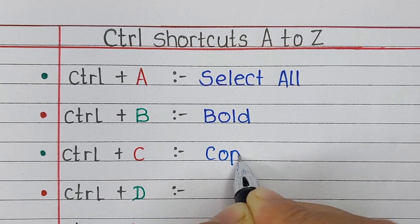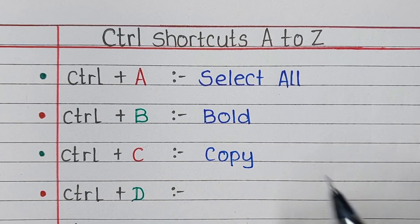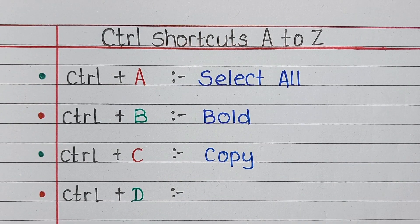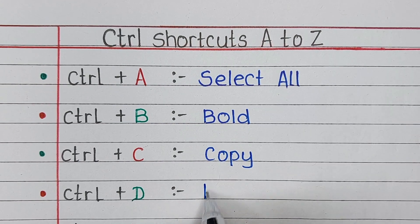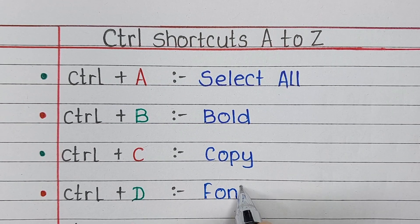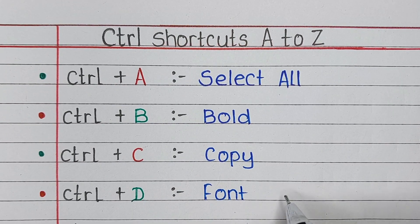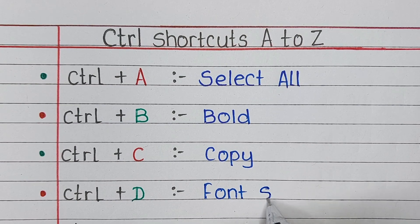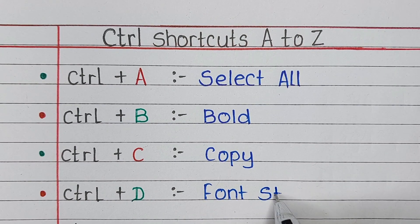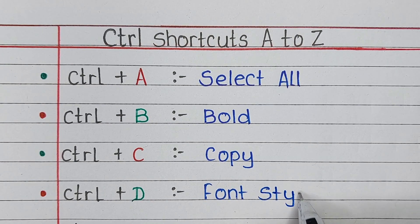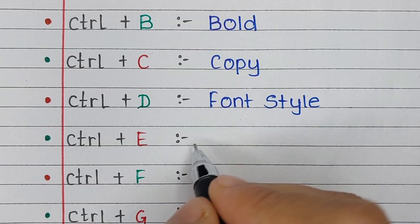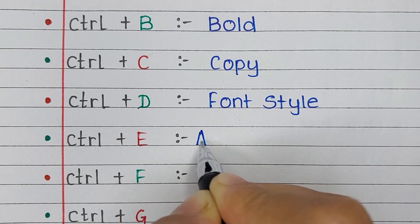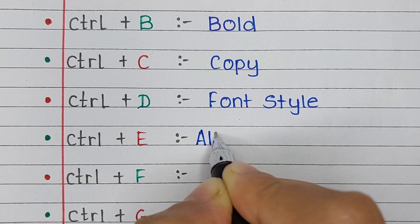Next one is Control C. Control C is the shortcut for Copy. Next one is Control D. Control D is the shortcut for Font Style.